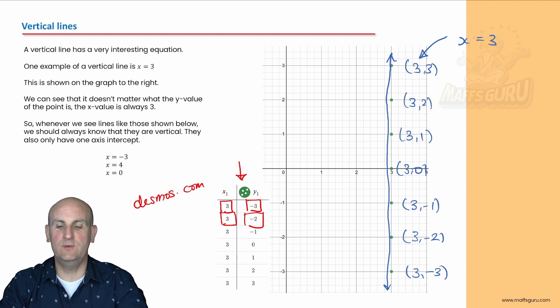It doesn't matter what the y value is, the y value could be 943 million. It doesn't matter what the y value is, every single point along that line has an x coordinate of 3. So that particular line would have an equation x equals 3.